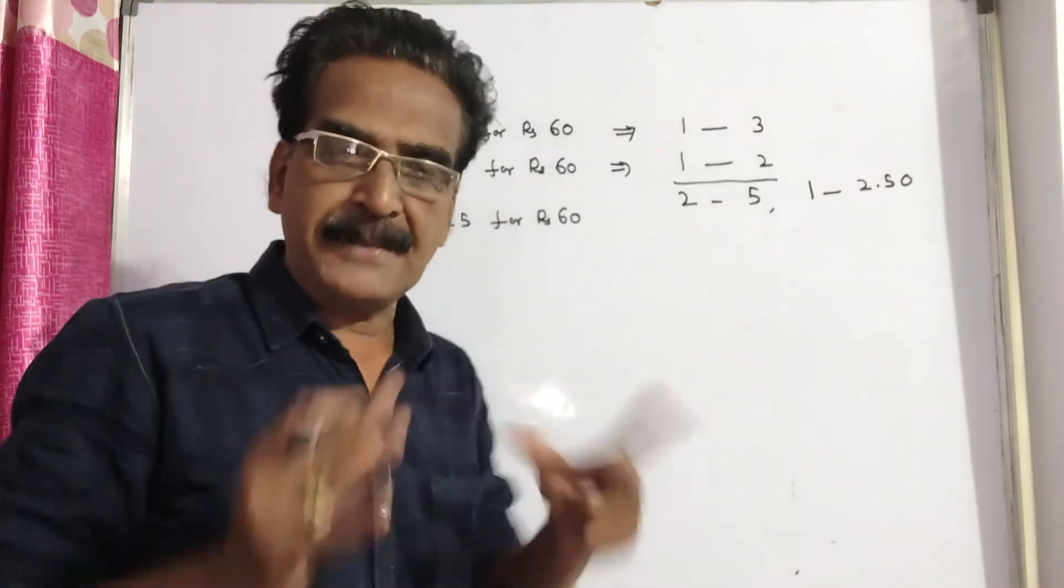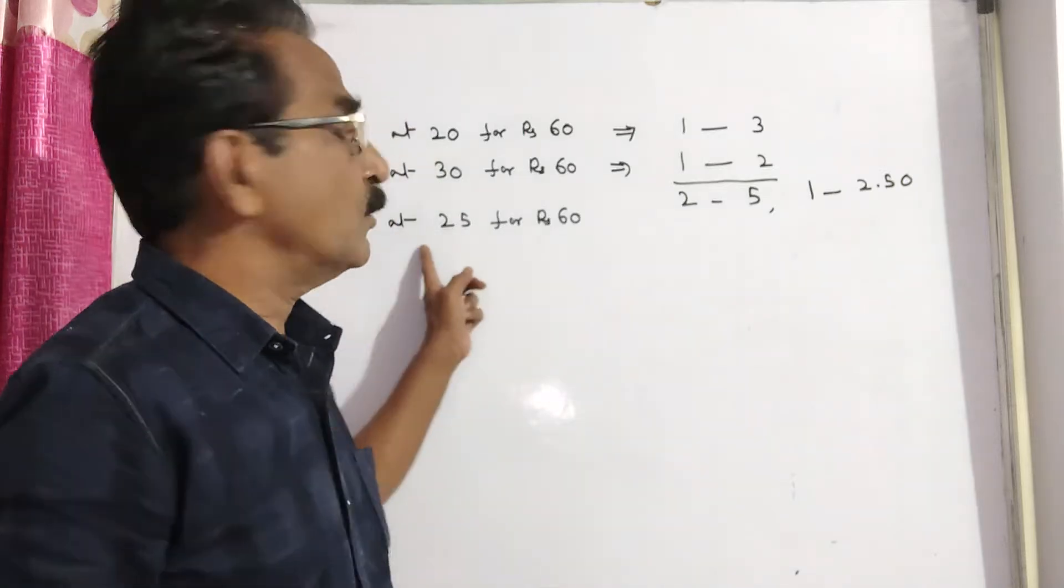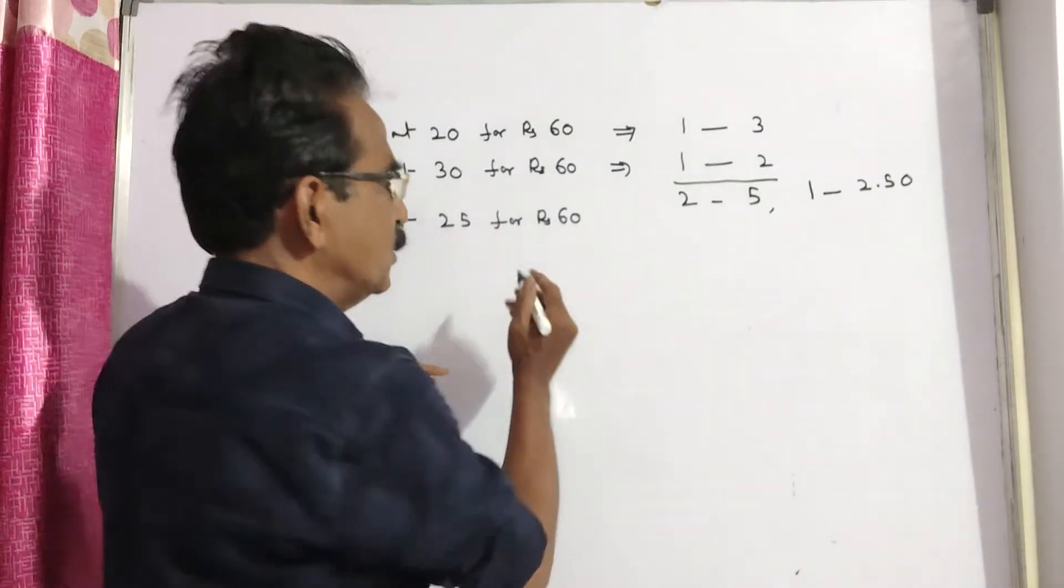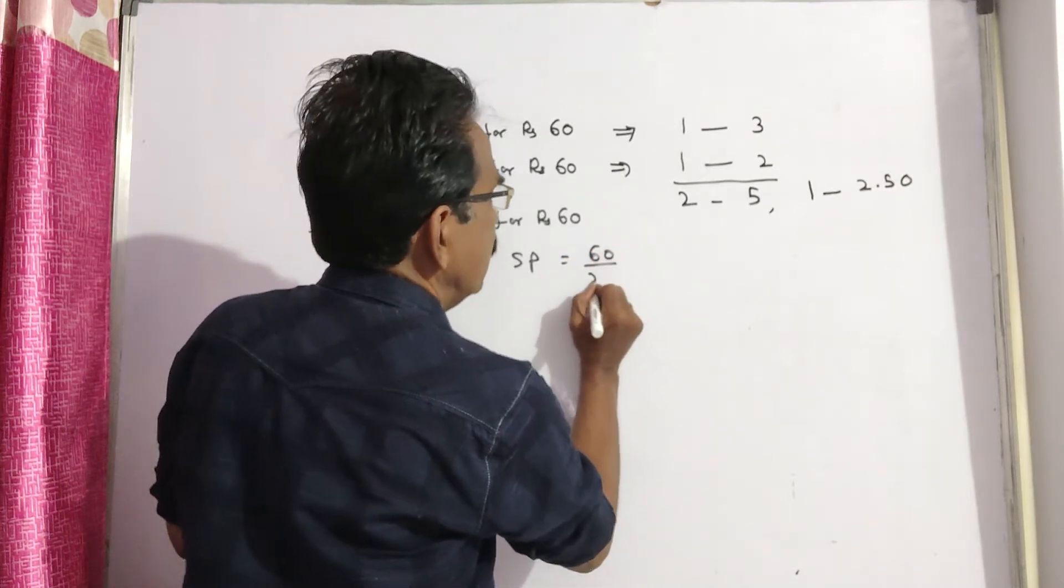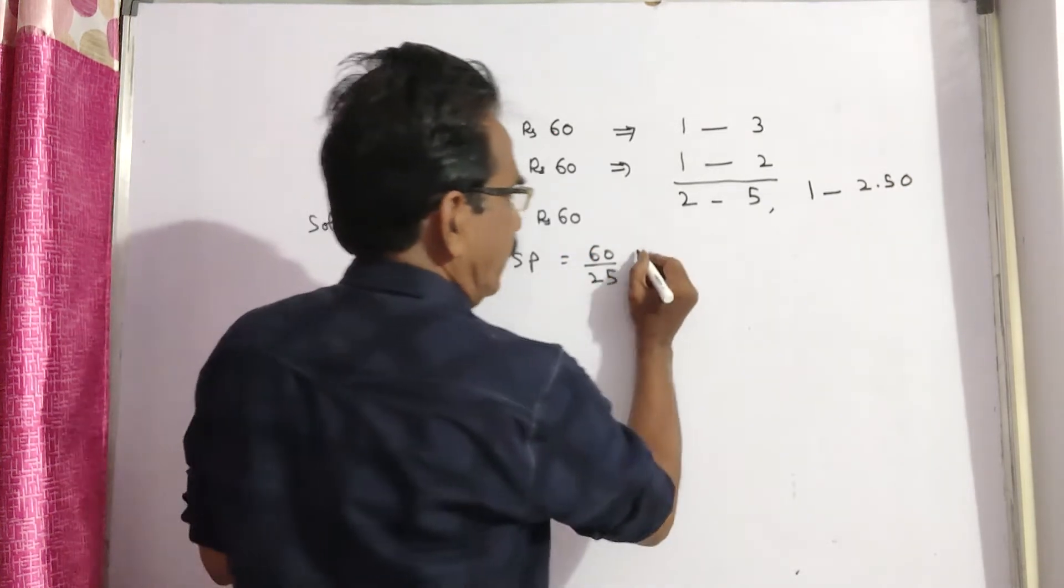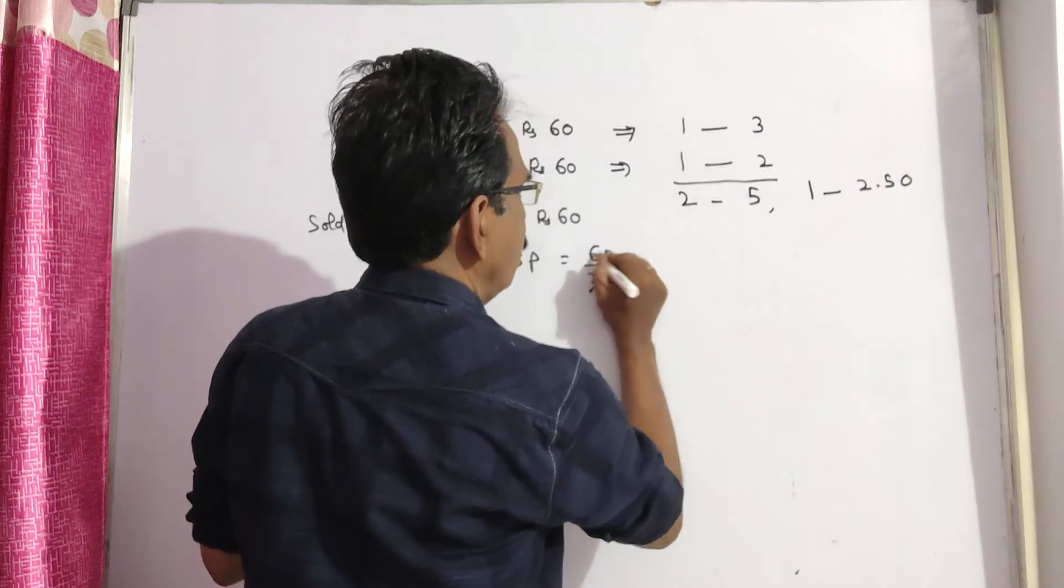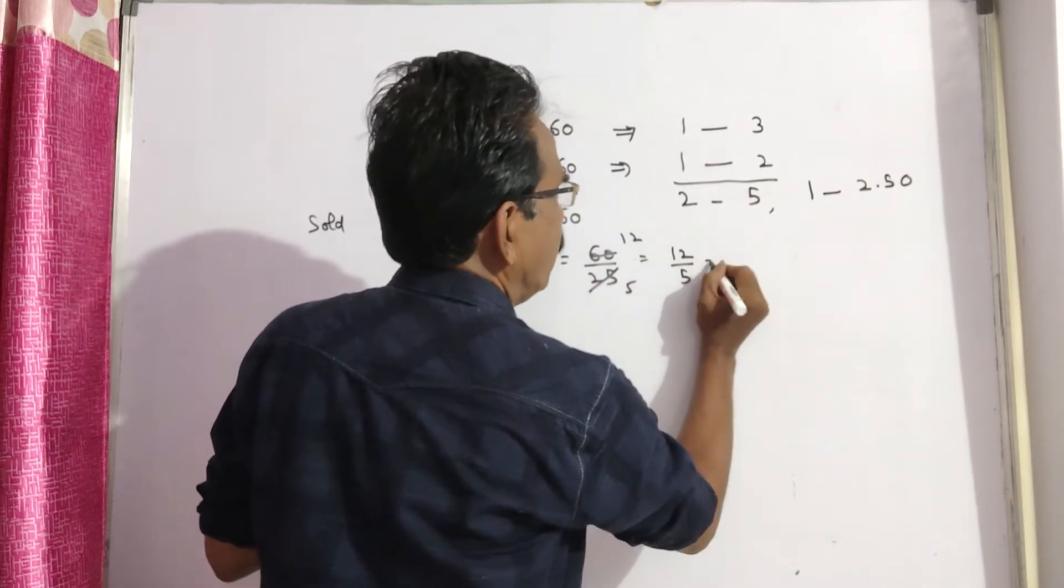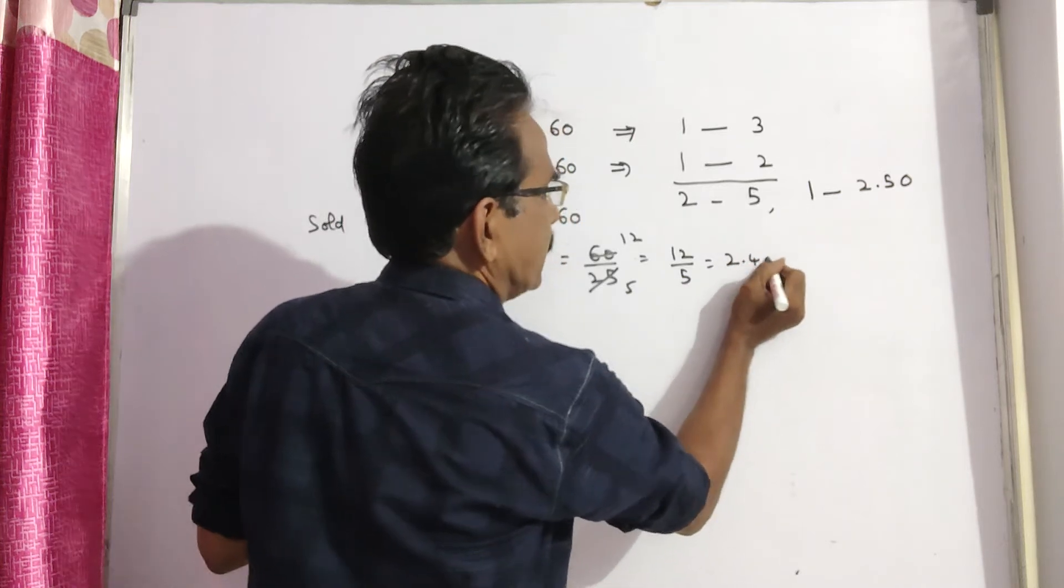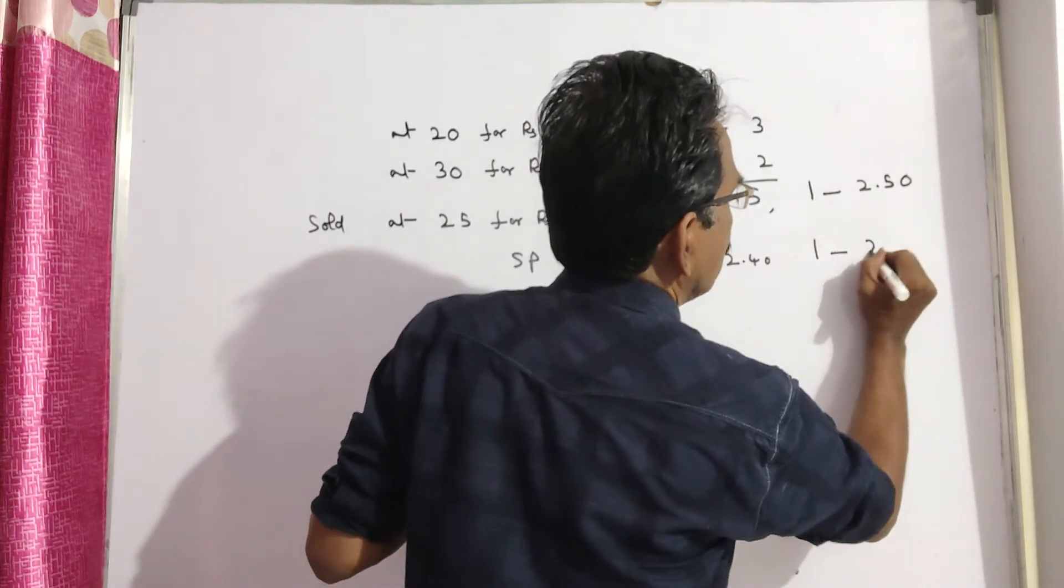And he mixes them and sells them at 25 for Rs. 60. So the selling price of each orange is 60 divided by 25. Five fives, five twelves, that equals Rs. 12 divided by 5. 12 divided by 5 means Rs. 2.45. So the selling price of each orange.